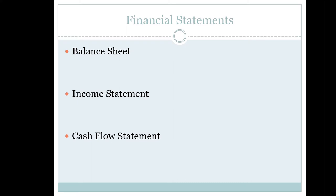These are the big three financial statements: balance sheet, income statement, cash flow statement. The balance sheet is the historical picture of a firm at a point in time — a still picture of the firm. We look at the balance sheet and say this is what the firm's finances look like at the end of the year, December 31st 2020, and at the end of 2019 and 2018. It provides the holistic picture of the firm: assets, liabilities, and equity.